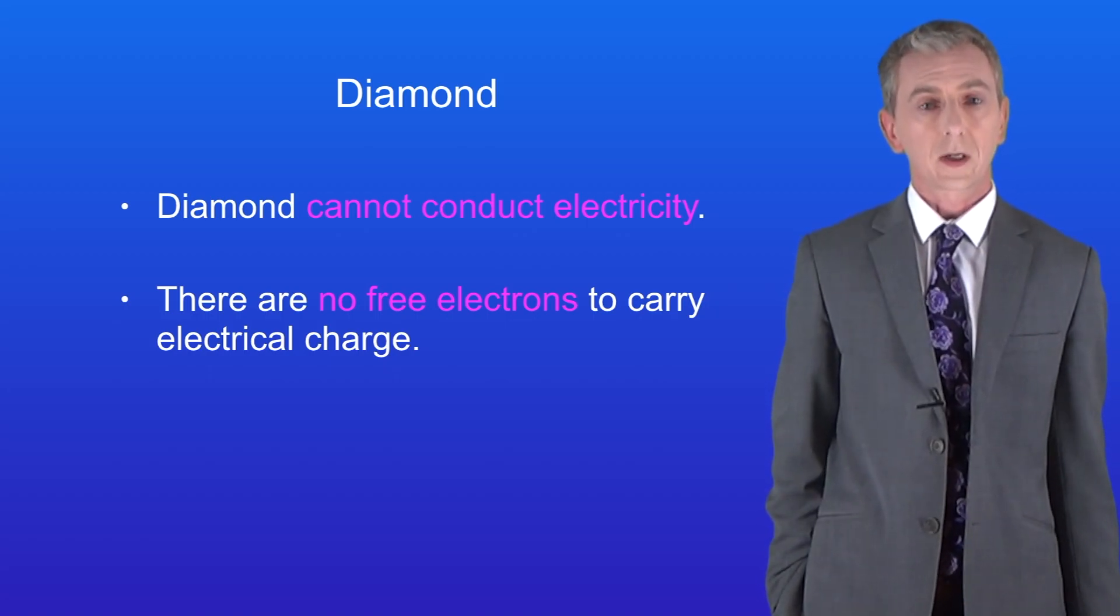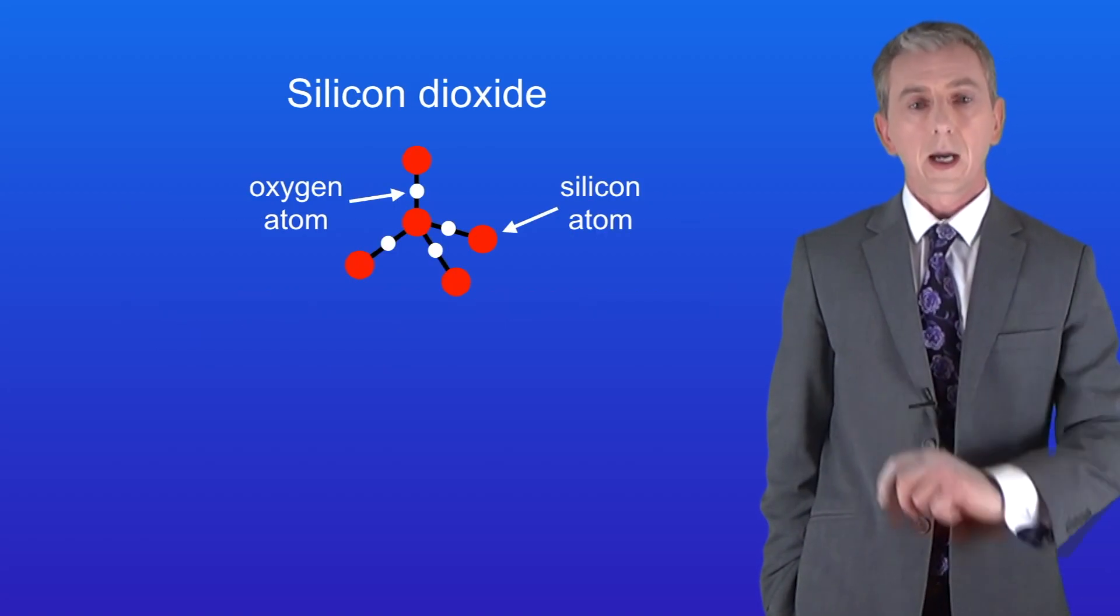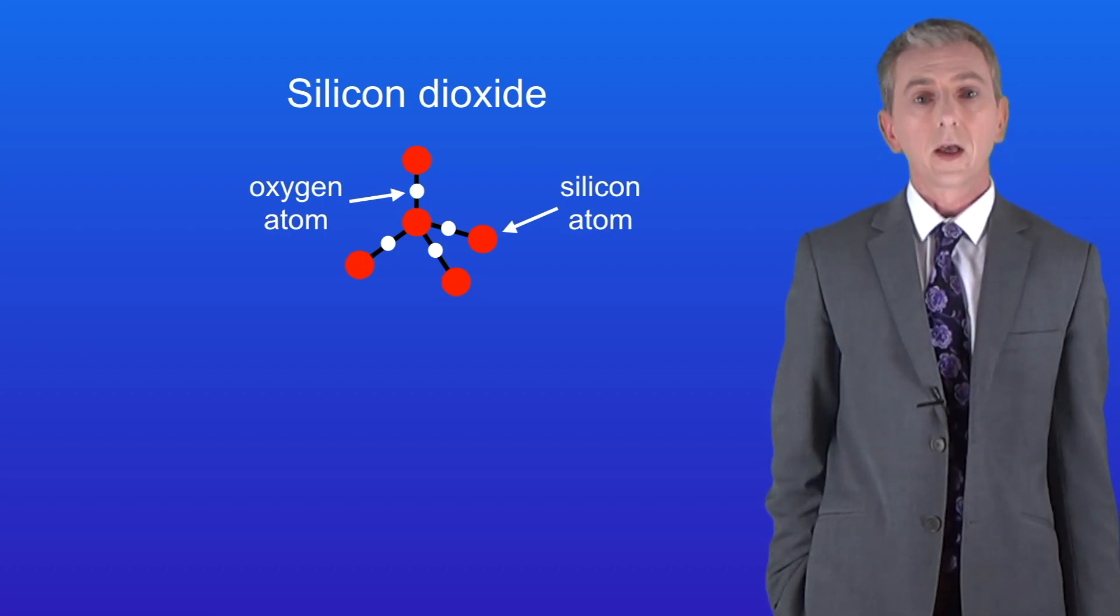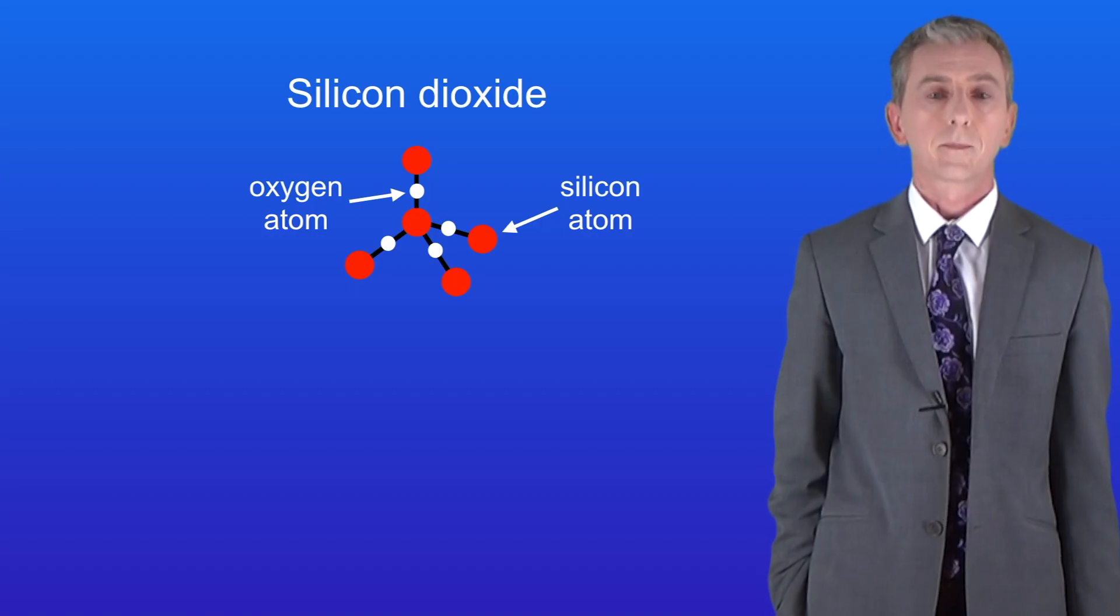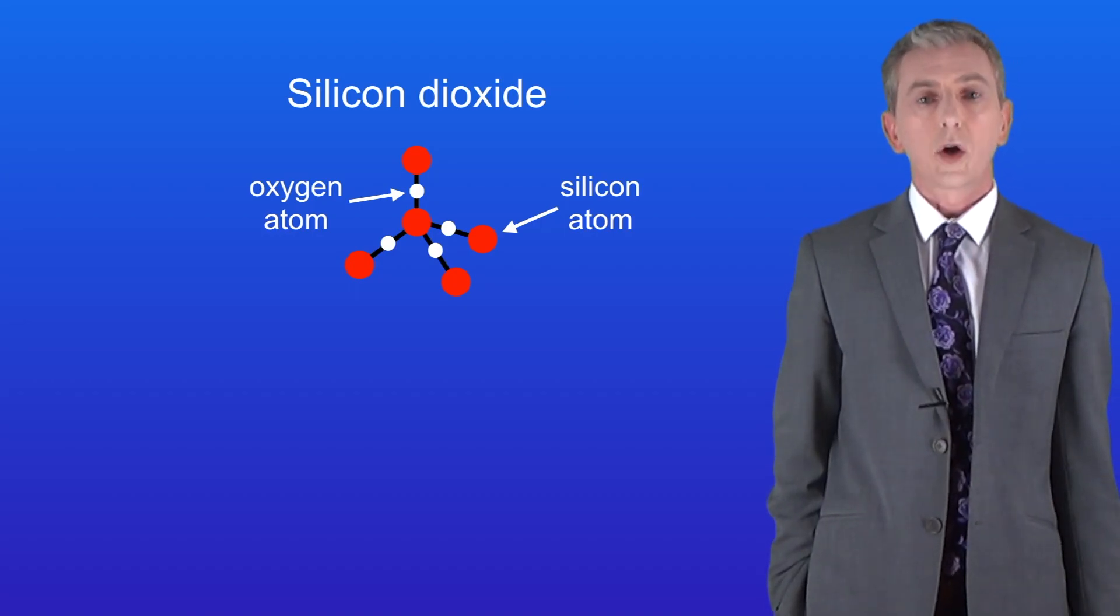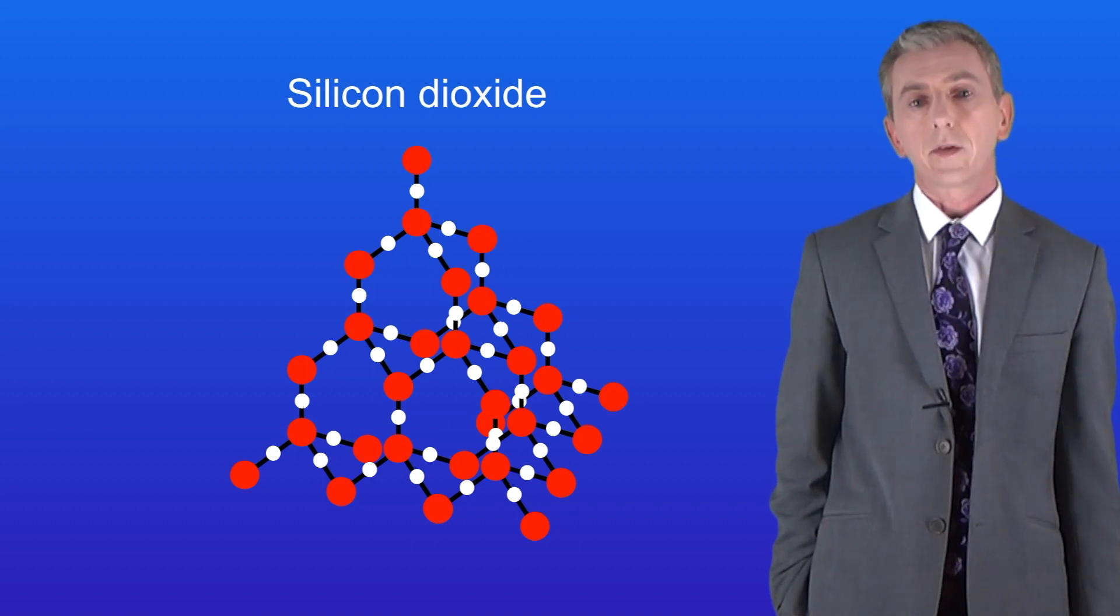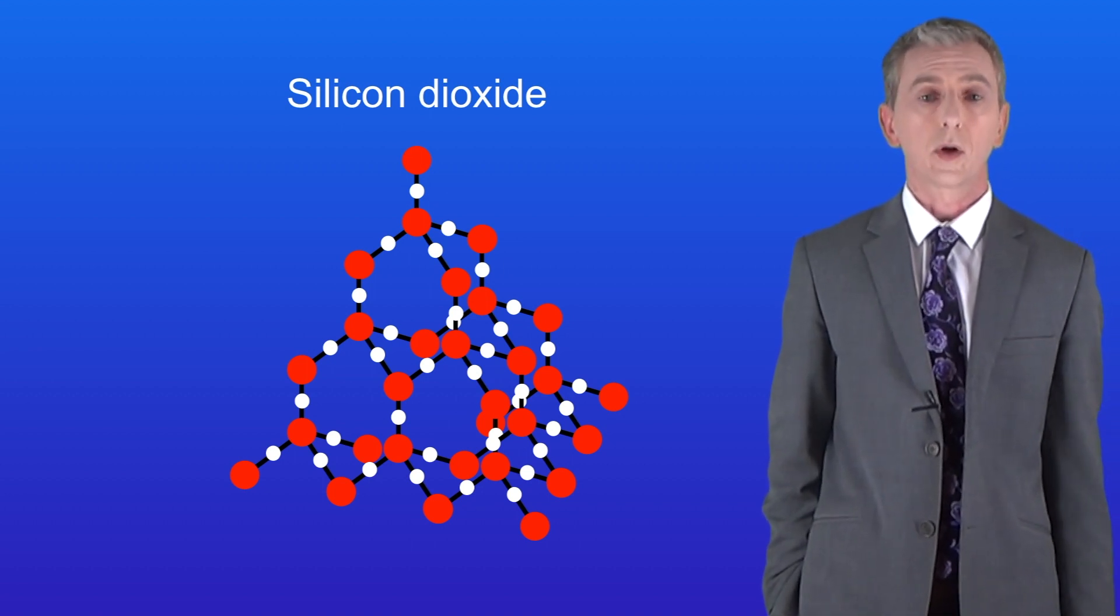I'm showing you the structure of silicon dioxide here. As you can see it contains the elements silicon and oxygen covalently bonded together. Because it's a giant covalent molecule it contains a huge number of covalent bonds and I'm showing you a tiny part of the molecule here.